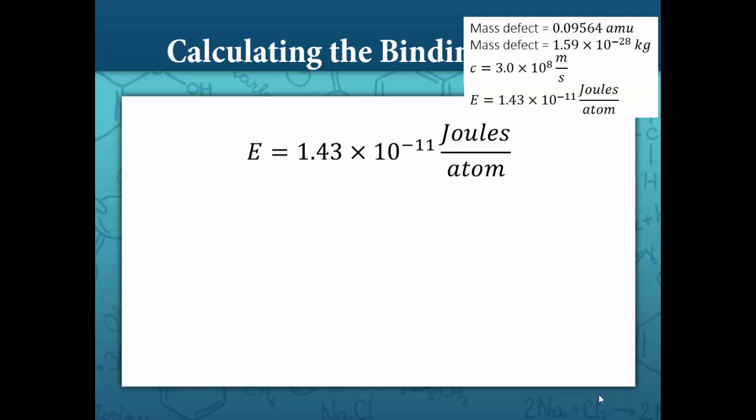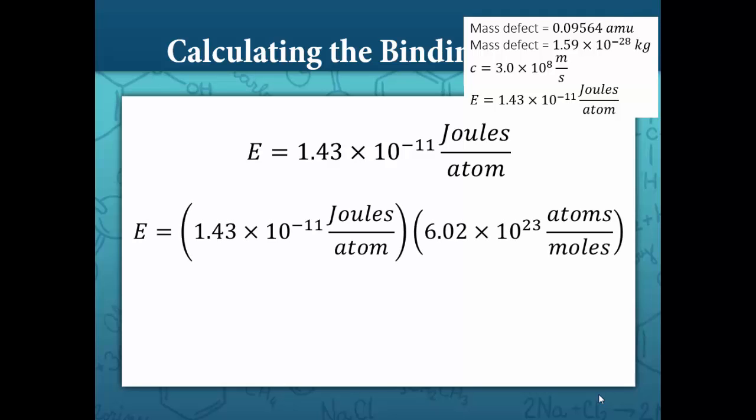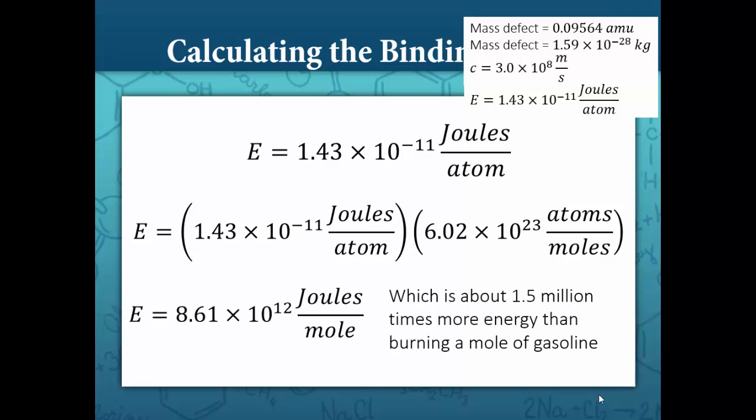Per mole of carbon atoms, we would multiply this number by 6.02 times 10 to the 23rd atoms per mole, and get a binding energy of 8.61 times 10 to the 12 joules per mole, which is about 1.5 million times more energy than burning a mole of gasoline.